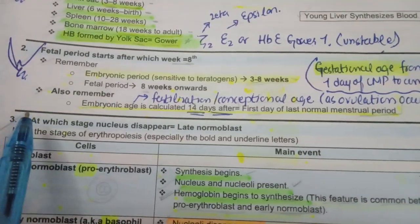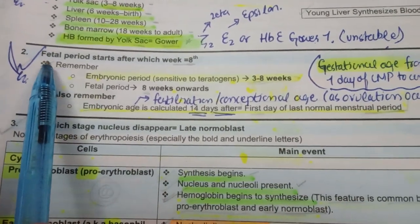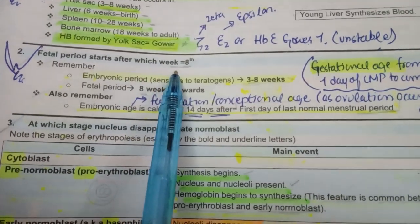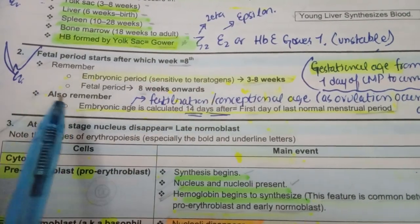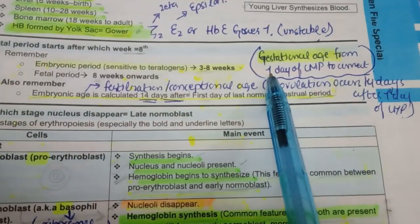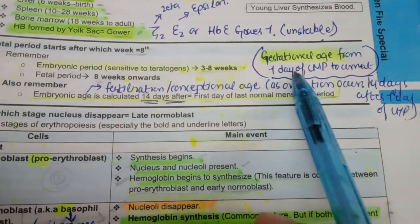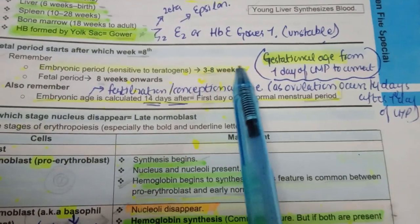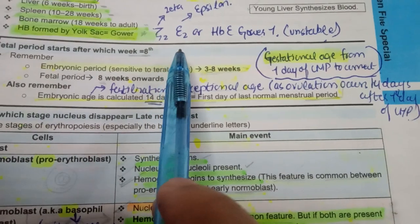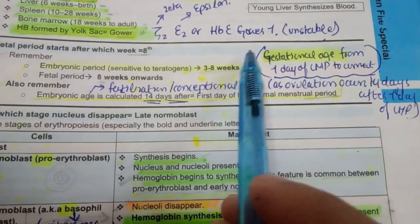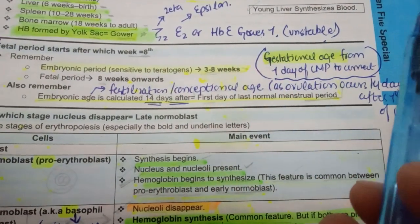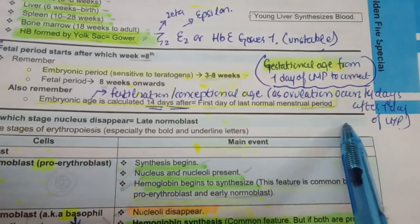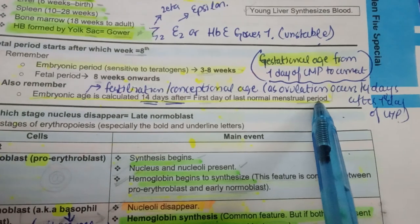Now coming to the fetal period. Fetal period starts after which week? It starts at the 8th week. The basic concept is that gestational age is counted from the first day of the last menstrual period to the current date — the day the patient presents to us.